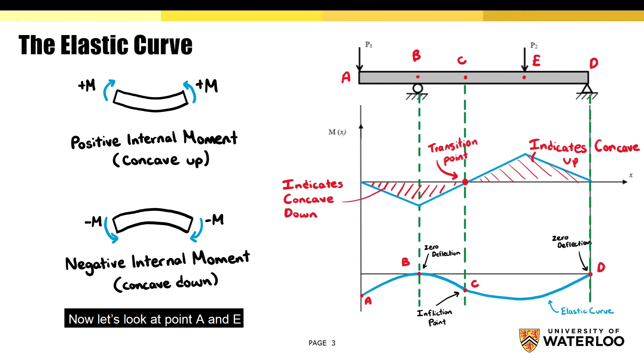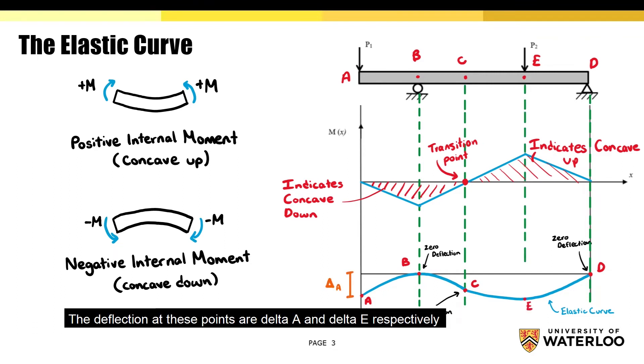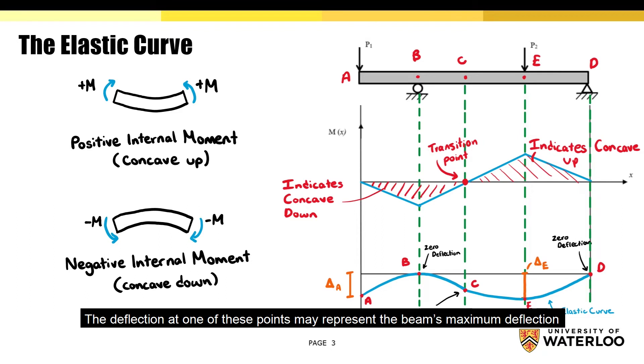Now let's look at points A and E. The deflection at these points are delta A and delta E respectively. Depending on the magnitude of P1 and P2, the deflection at one of these points may represent the beam's maximum deflection.